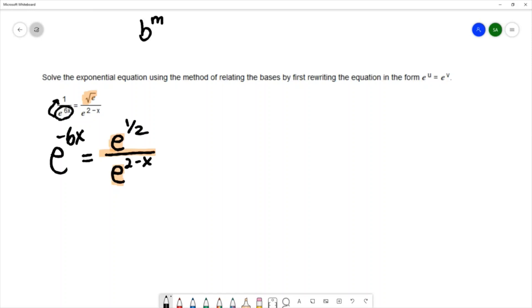The quotient rule says that we would subtract the exponents to simplify.